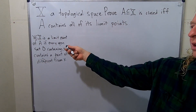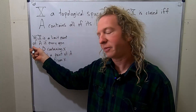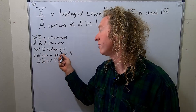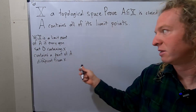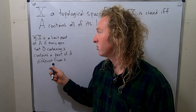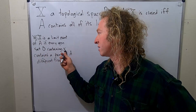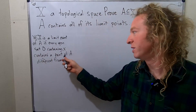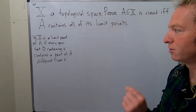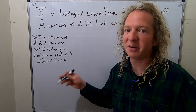Here I've written the definition of limit point. We say X in capital X is a limit point of A if every open set O containing X contains a point of A that is different from X. X is not a limit point if you can find at least one open set O containing X that does not contain points of A different from X.